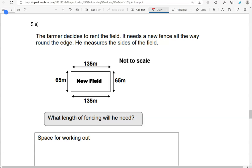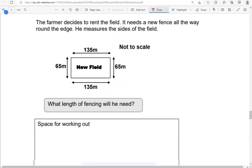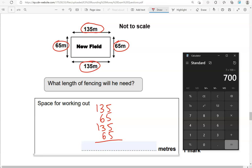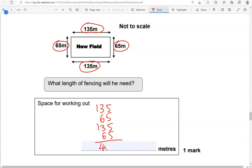The farmer decides to rent the field. It needs a new fence all the way around the edge. He measures the sides of the field. So we've got 135 metres, 65 metres. What length of fencing will he need? So, going around, we'll go 135 and then 65, 135 and 65. So, adding all of these together.